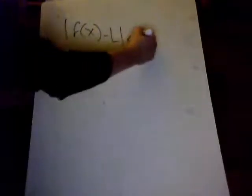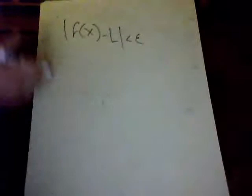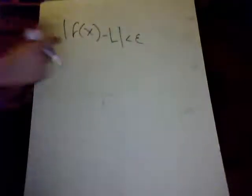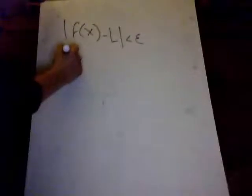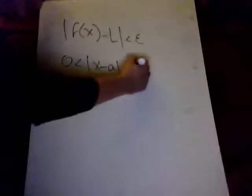Anyways, so we can substitute for the expression how sufficiently close to a with this expression: |f(x) - L| less than some number epsilon, and another one, how sufficiently close to L with 0 less than |x - a| less than delta.